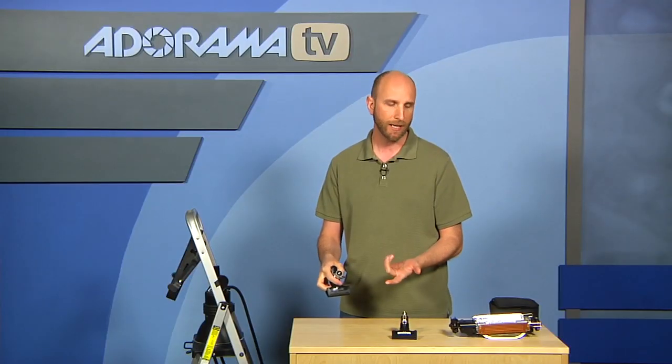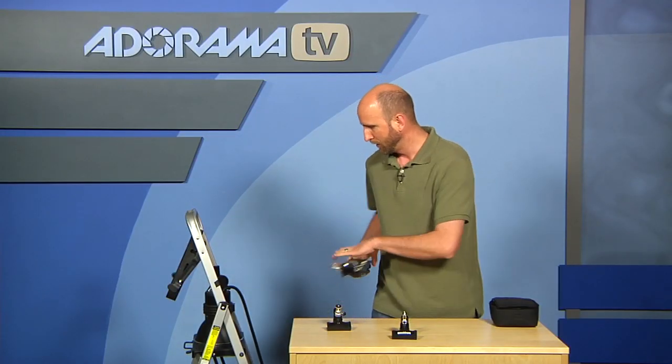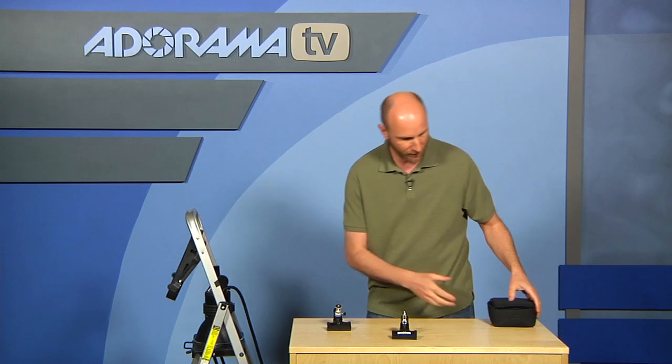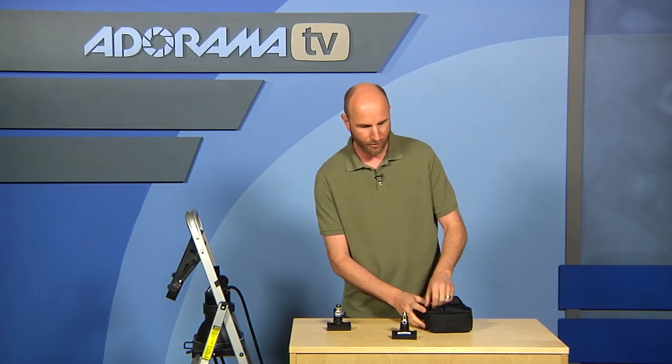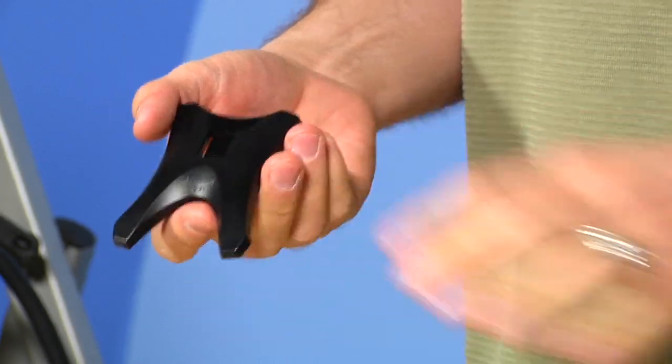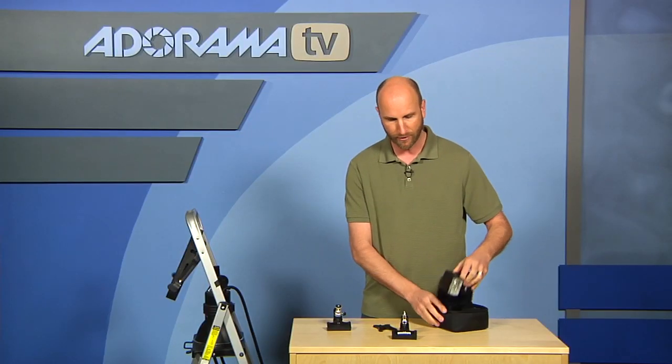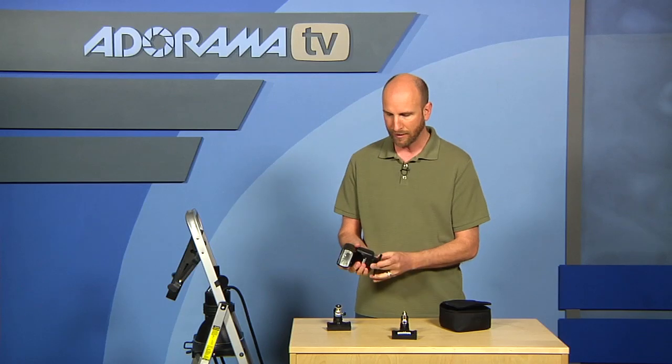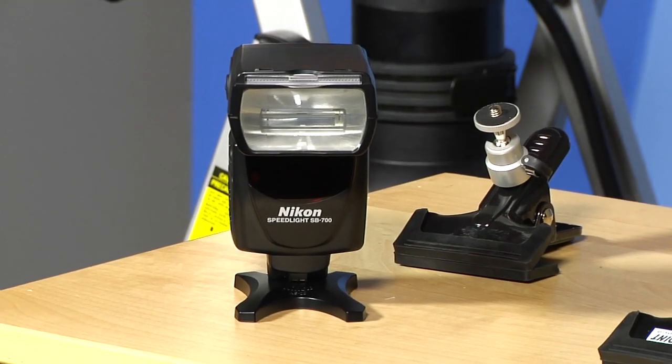Now the other one is made for using a light that might have a little teeny quarter 20 thread. And this would be something for like a speed light. Now I'll show you right fast here. If you have a normal speed light, this is my Nikon SB700. Usually inside the box you've got something that looks like this. And this is normally made for shooting on flat surfaces. So you could slide your speed light onto that and stick it down on a surface.